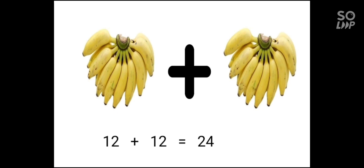In one dozen, there are 12 bananas. So how many bananas are there in two dozen? One dozen is 12 bananas, plus 12, that is 24. So in two dozen, there are 24 bananas.